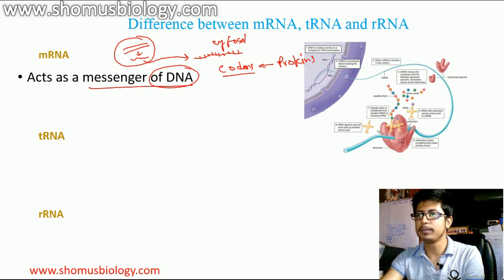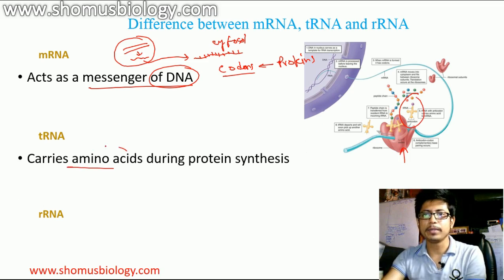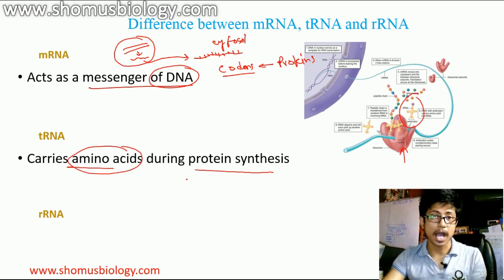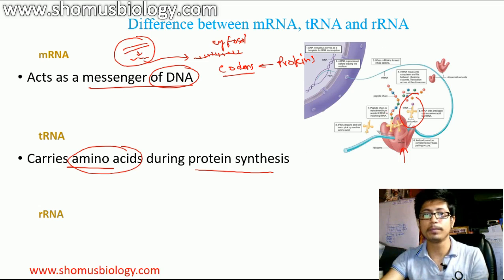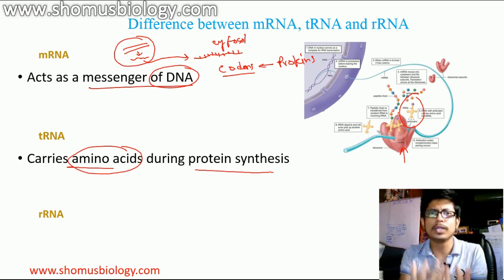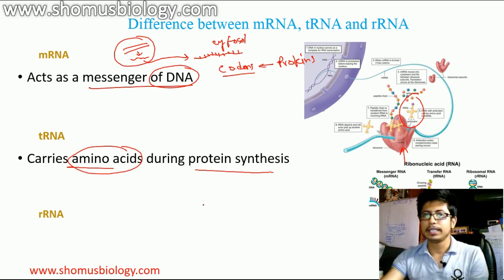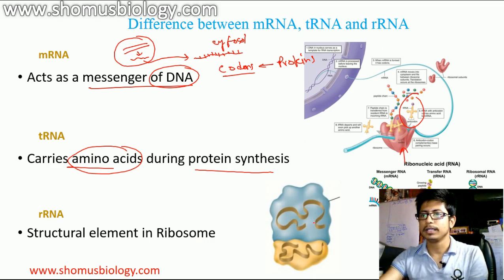tRNA carries amino acids during protein synthesis — it is a transfer RNA. It transfers amino acid sequences, bringing those amino acids one by one by reading the proper codons of the mRNA, and then adding those amino acids together to form a peptide chain. The ribosome carries out the catalytic activity of peptide bond formation. As for rRNA, it is part of the ribosome's structural unit.